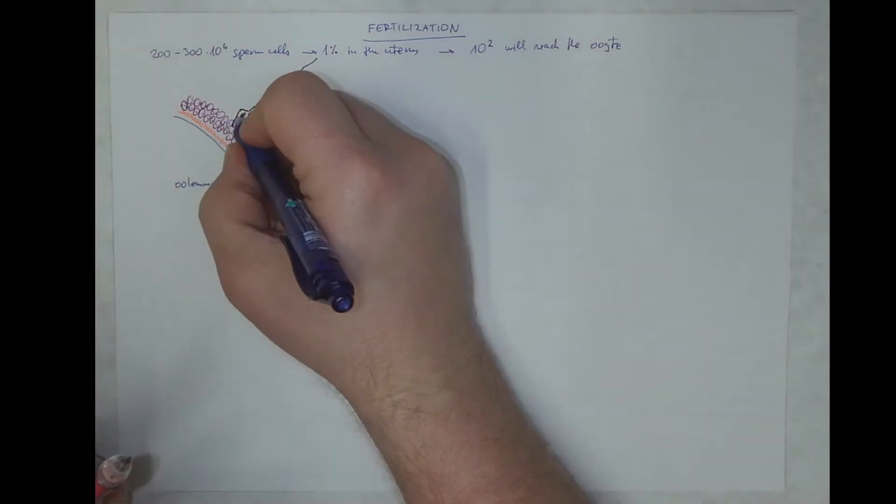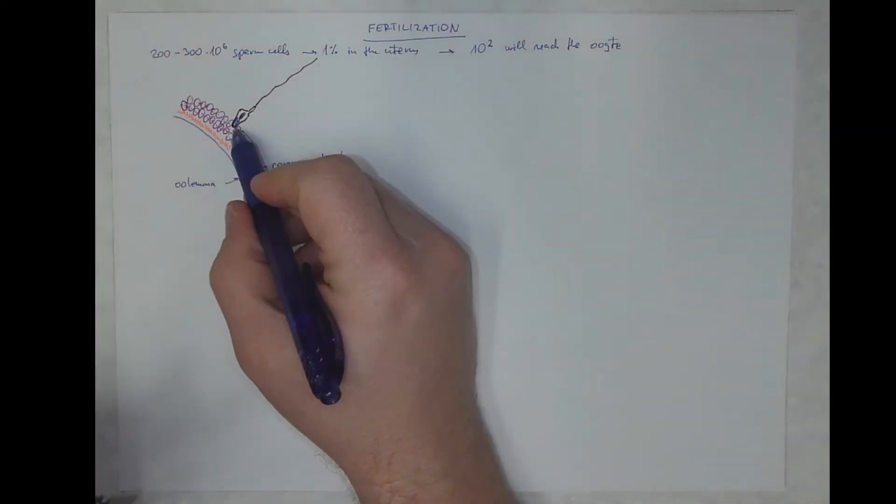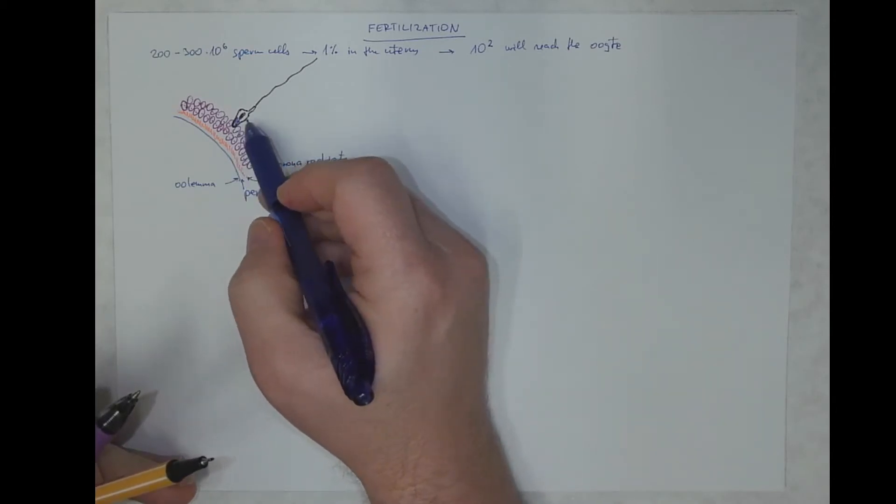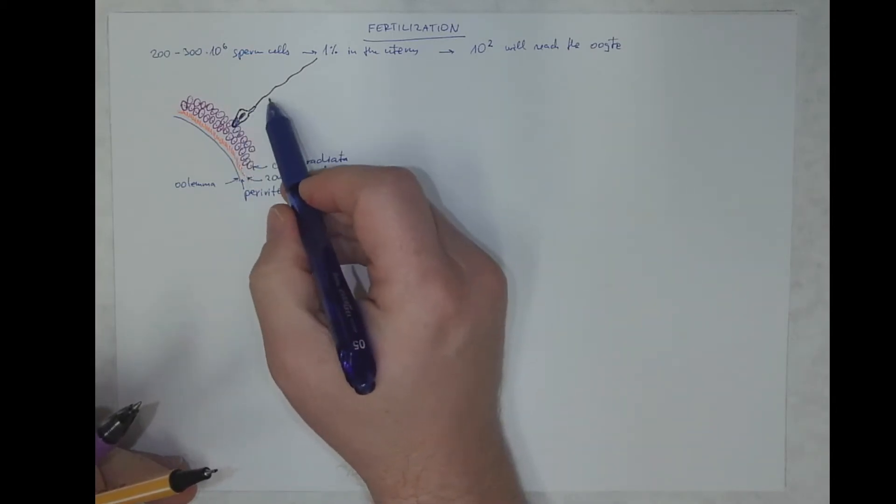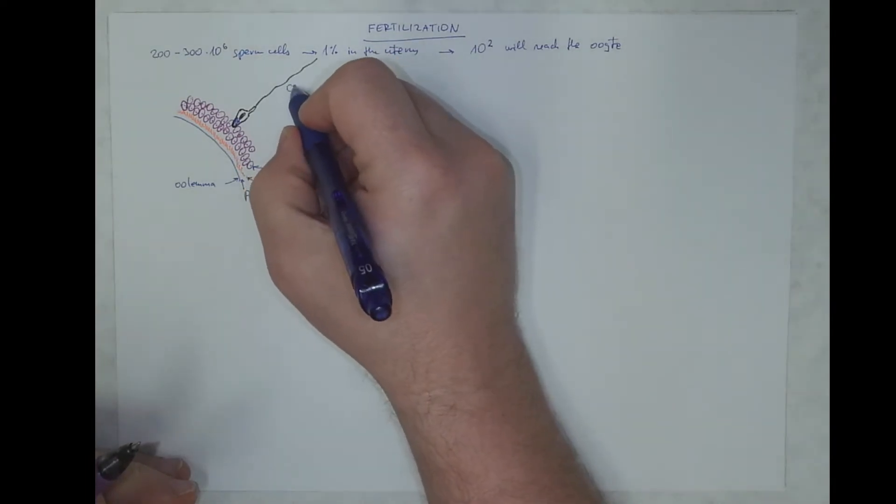And the first sperm that will reach this will adhere with its membrane. And we know there is an acrosome membrane system containing hydrolytic enzymes here. And these enzymes will be released. Prior to this, each sperm cell has to undergo a process called capacitation.